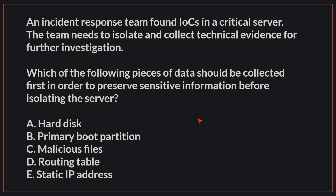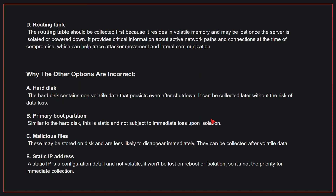The correct answer is D: Routing table. The routing table should be collected first because it resides in volatile memory and may be lost once the server is isolated or powered down. It provides critical information about active network paths and connections at the time of compromise, which can help trace attacker movement and lateral communication.